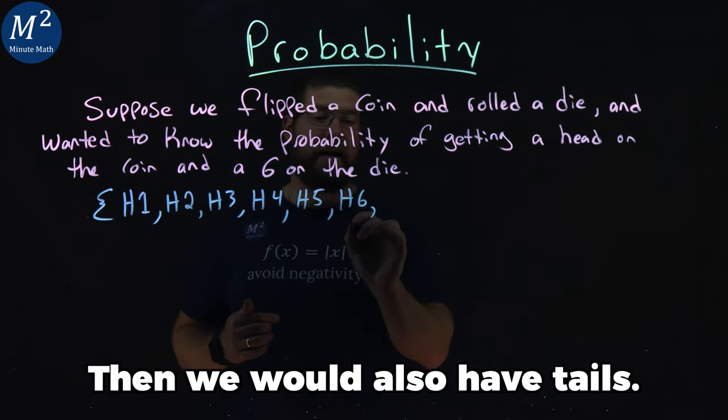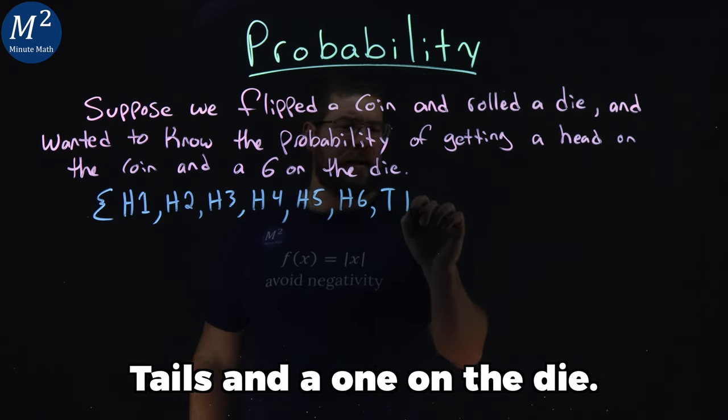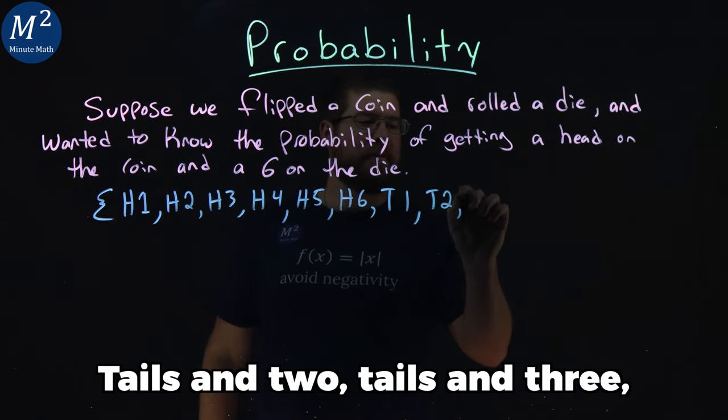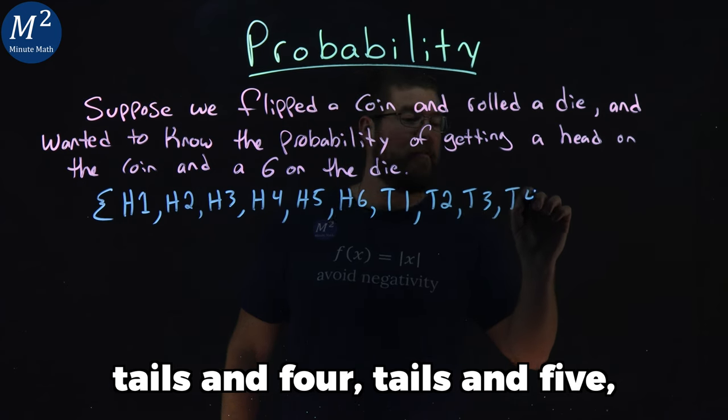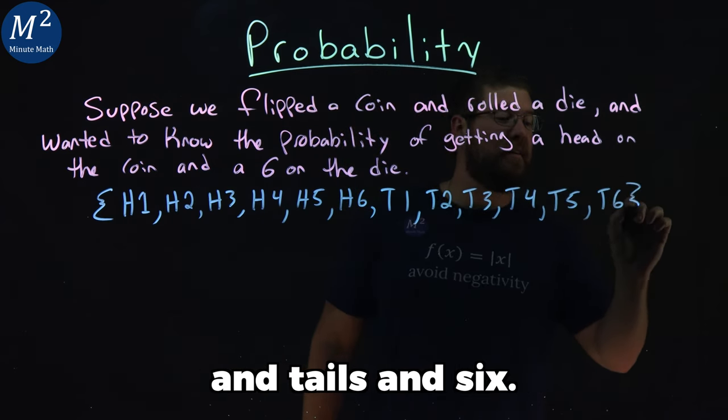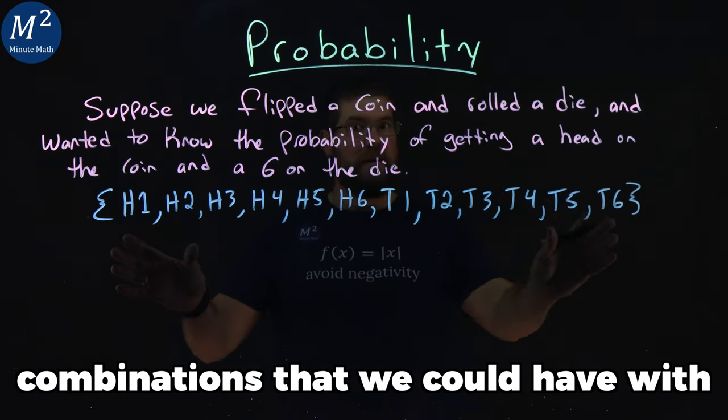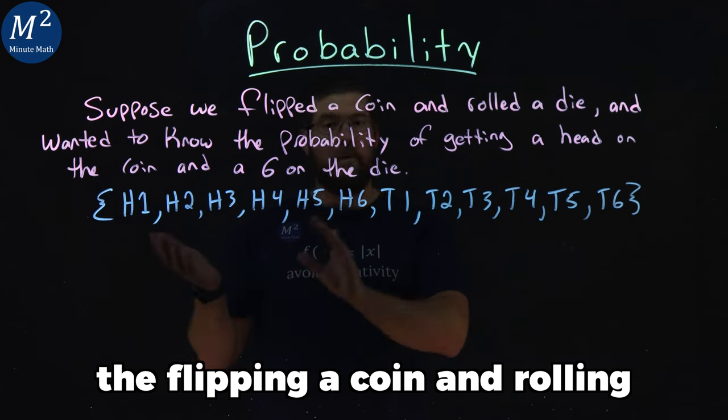And we would also have tails—the two options for a coin are heads and tails. So tails and a one on the die, tails and two, tails and three, tails and four, tails and five, and tails and six. Now we have all the possible combinations that we could have with flipping a coin and rolling a die.